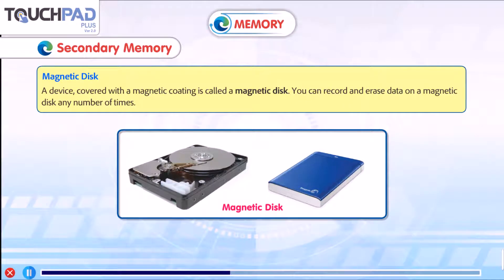Magnetic disk: a device covered with a magnetic coating is called a magnetic disk. You can record and erase data on a magnetic disk any number of times.